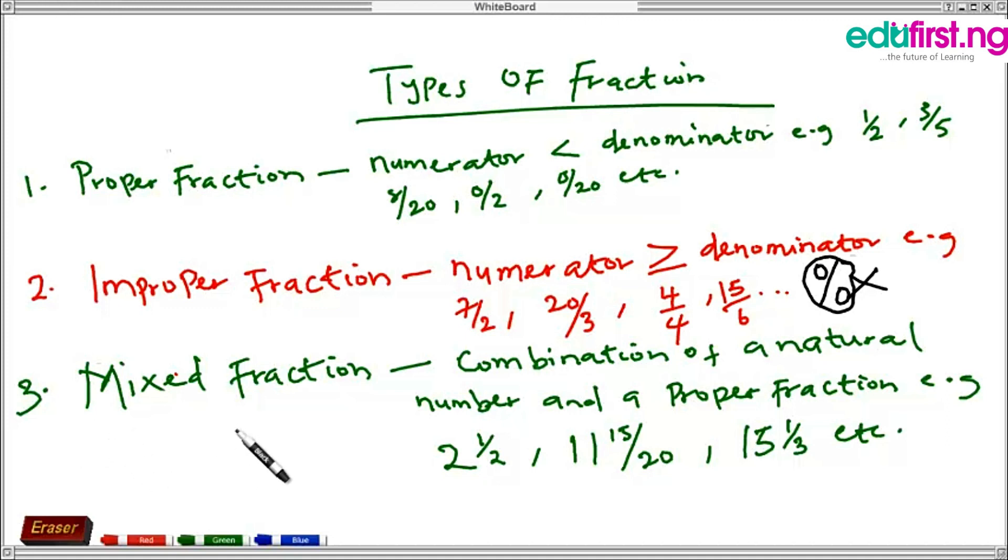So the third type of fraction is called the mixed fraction. A mixed fraction is a combination of a natural number and a proper fraction. You already know what the proper fraction is. So now what is the natural number? Natural numbers are counting numbers: 1, 2, 3, 4, 5, 6 - you can count to infinity. So this is a natural number like we have in our examples here. We have 2 whole number 1 over 2 - this is a natural number - and this is how to read it: 11 whole number 15 over 20.